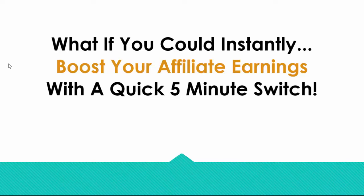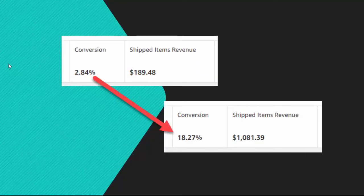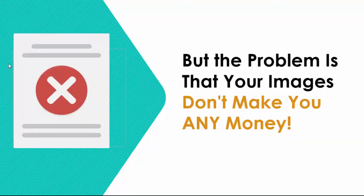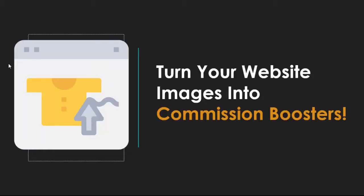What if you could instantly boost your affiliate earnings with a quick five-minute switch? How would you like to activate hidden commissions right on your current website with just a few simple changes and see conversion increases like this? So let me ask you a question: are the images on your website earning you money? When you go to a website, the first thing you notice is the images — they grab your attention, your eyes are drawn to them. But the problem is that your images don't make you any money. They instantly grab the attention of your visitors, but that attention doesn't turn into commissions for you.